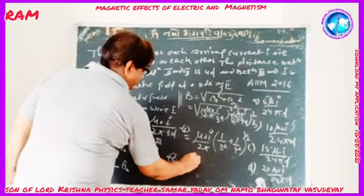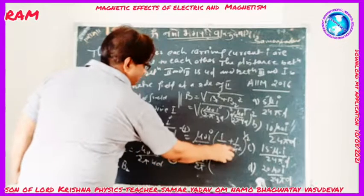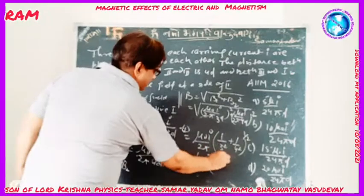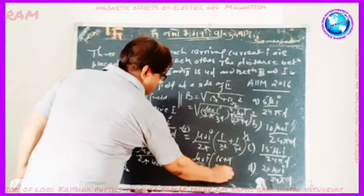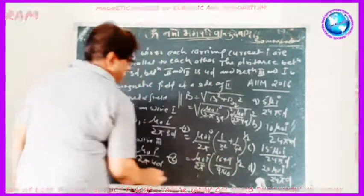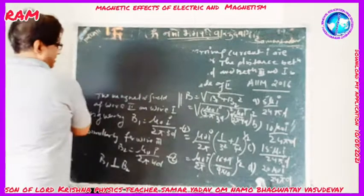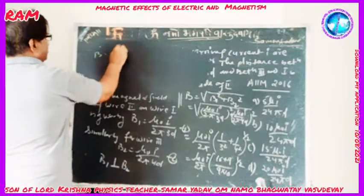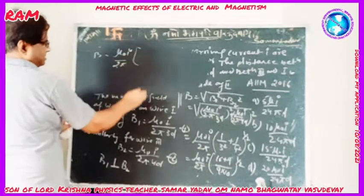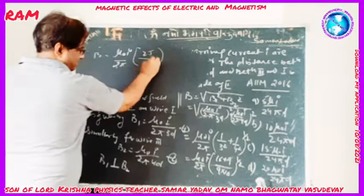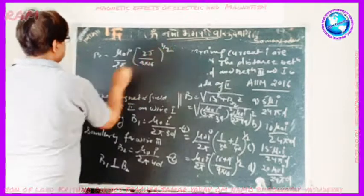Simplifying further: B = (μ₀I / 2π) × √[ 1/9 + 1/16 ]. Taking LCM of 9 and 16, which is 144, we get (16 + 9) / (9 × 16) = 25/144, raised to 1/2.